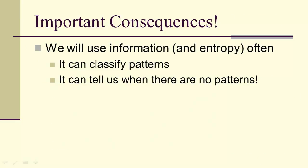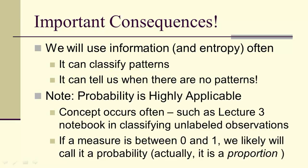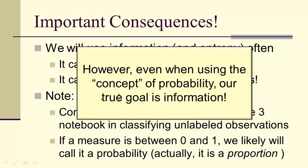We use information entropy often to classify patterns. It can even tell us when there are no patterns. So we'll also be using probability. We've used it already. And in general, if we have a measure that's between zero and one, we likely are going to call it a probability. It's actually a proportion. If it doesn't have units, it certainly can be interpreted as a percentage or a proportion. So when we're using the concept of probability, remember, our true goal is information.